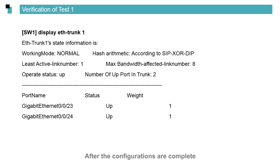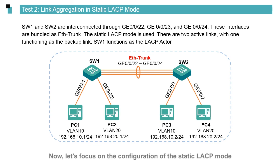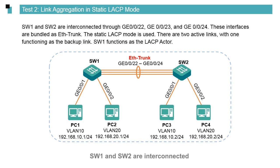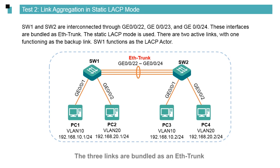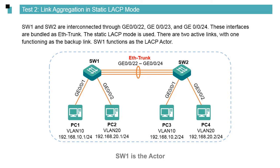After the configurations are complete, run the display ETH trunk command to view the ETH trunk status. Now let's focus on the configuration of the static LACP mode. SW1 and SW2 are interconnected through GE0-0-22, GE0-0-23, and GE0-0-24. The three links are bundled as an ETH trunk that works in static LACP mode. SW1 is the actor. In this aggregation link, two links are active and one link, used for backup, is inactive.